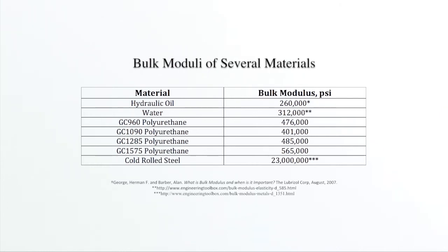GC960 is a softer polycaprylactone material. GC1090 is a medium hardness polyether-based TDI. GC1285 is a medium hardness polyether-based MDI. GC1575 is a hard polyester-based TDI.